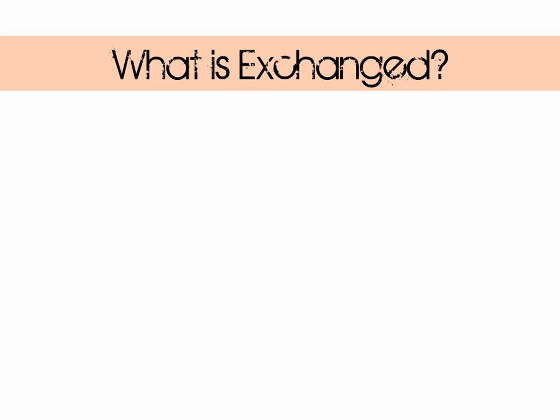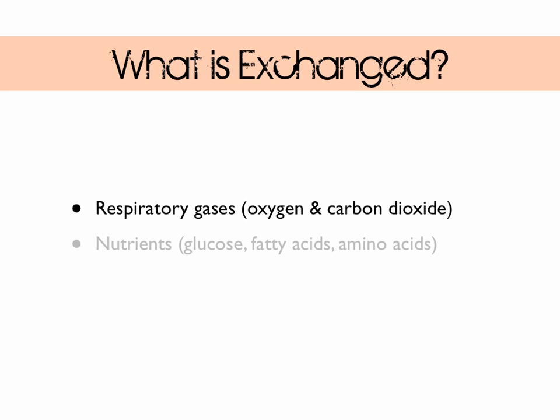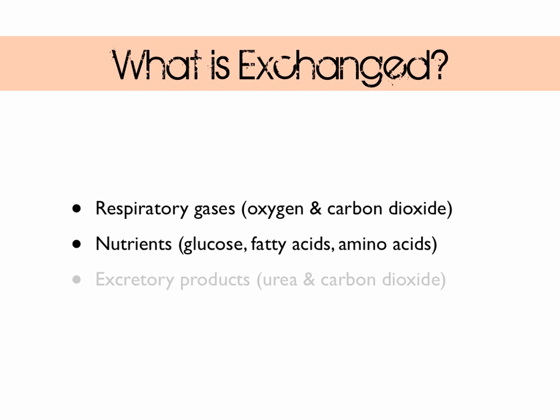Here are some substances that are exchanged from cell to environment and vice versa. We've got respiratory gases — that's oxygen and carbon dioxide — nutrients such as glucose, fatty acids, amino acids, vitamins and minerals, and excretory products, that's urea and carbon dioxide too. Metabolic heat can also be thought of as a waste product.